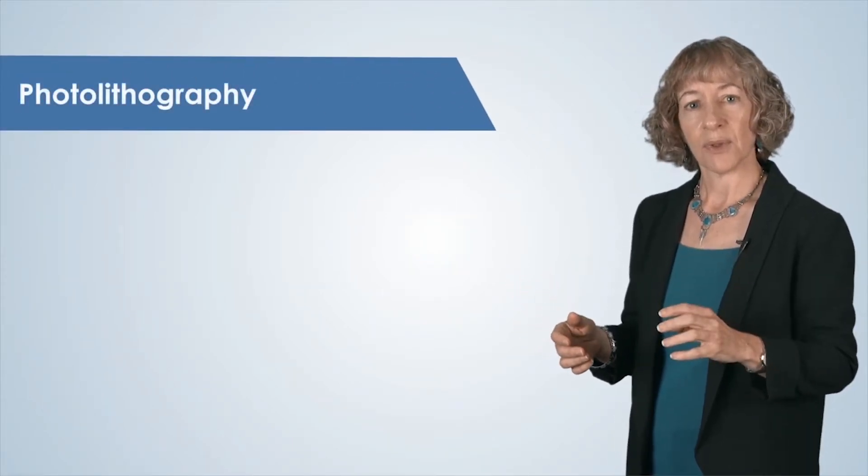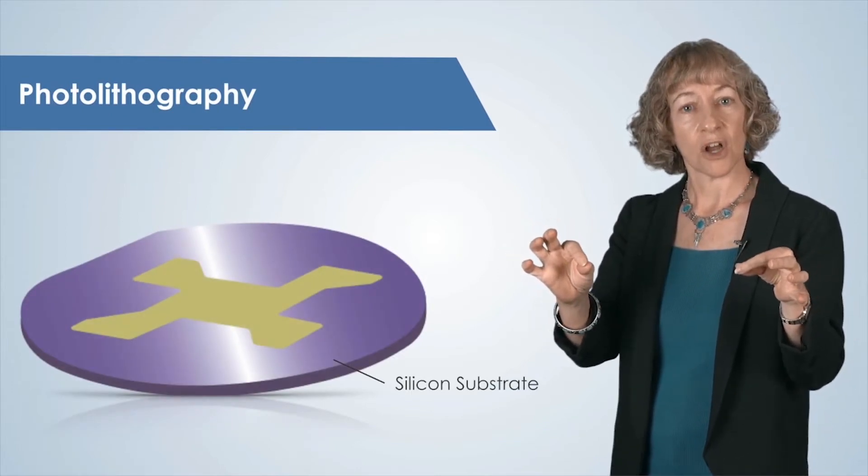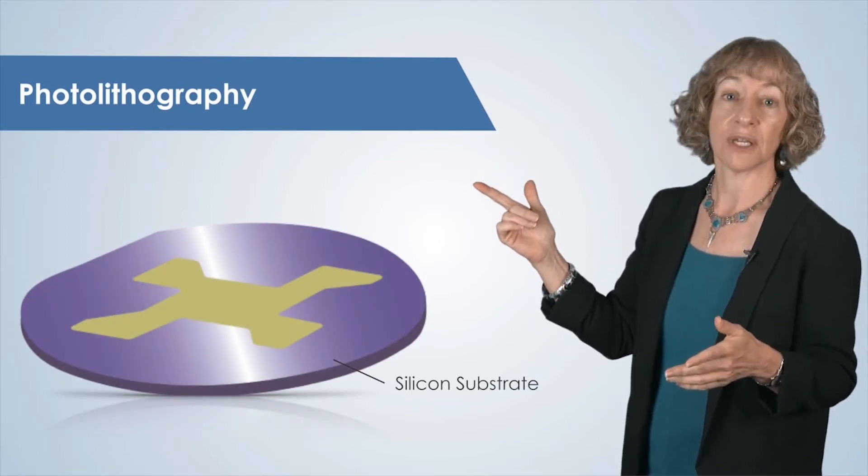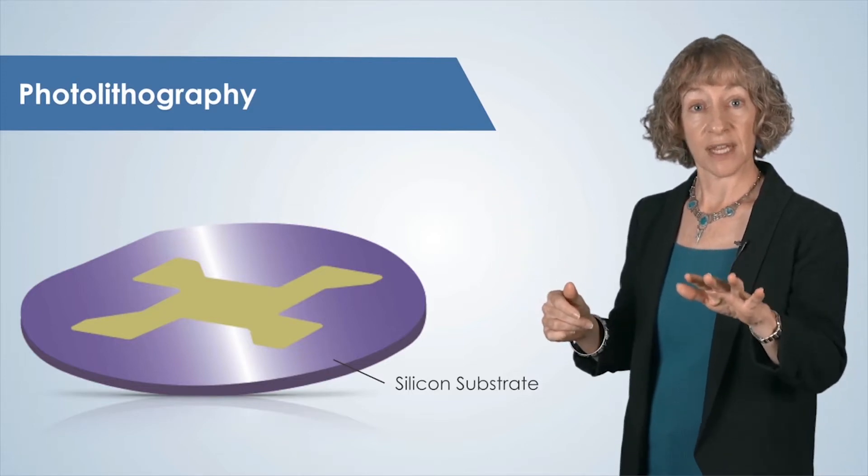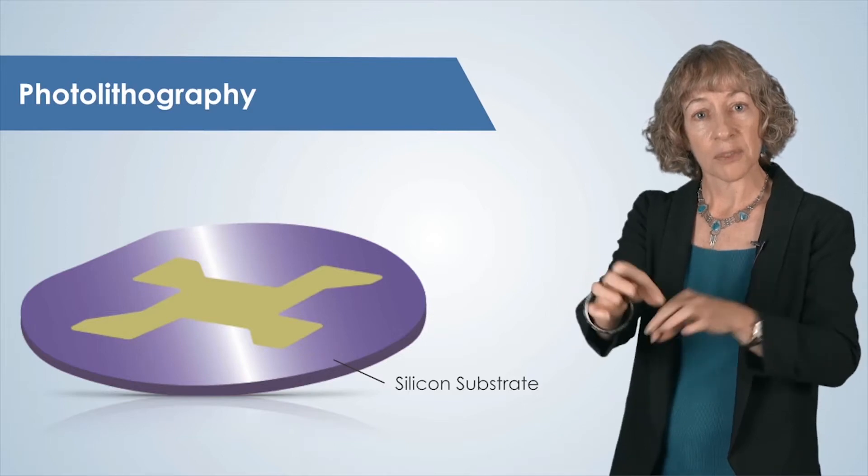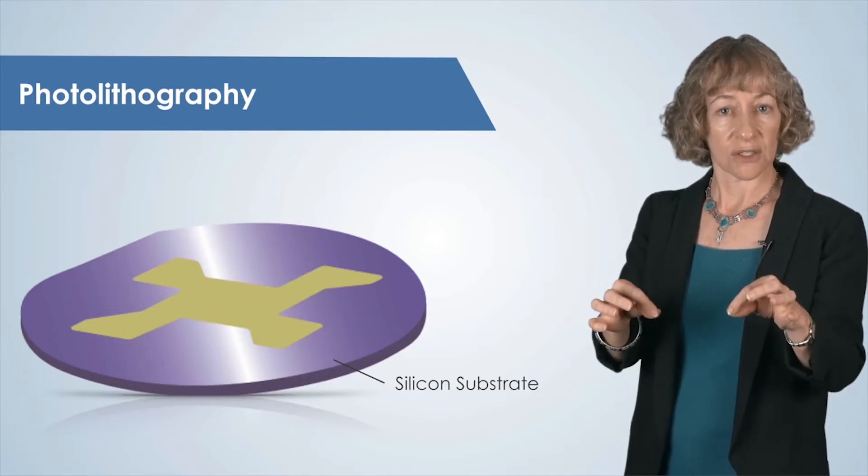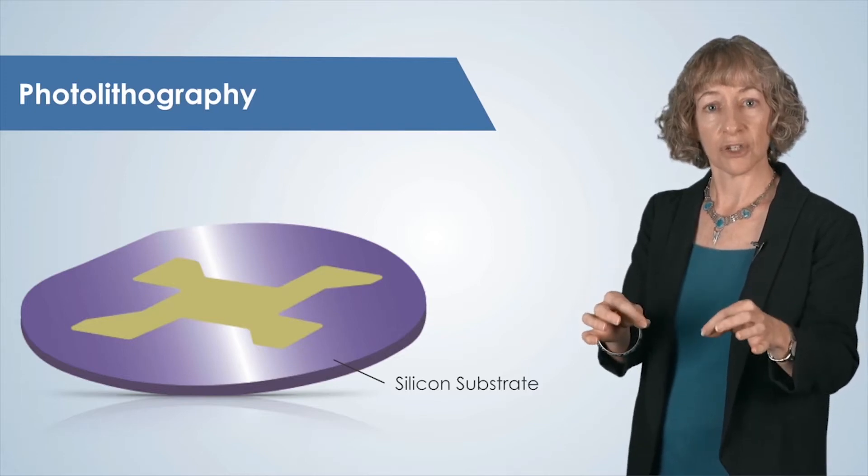First, we identify what pattern we want to make on our substrate. For example, we might want to pattern a layer of metal that has been deposited onto a silicon substrate, as shown here. If there are devices such as transistors in the silicon, then we might want to pattern the metal interconnect to connect the transistors in a certain pattern to make a circuit.